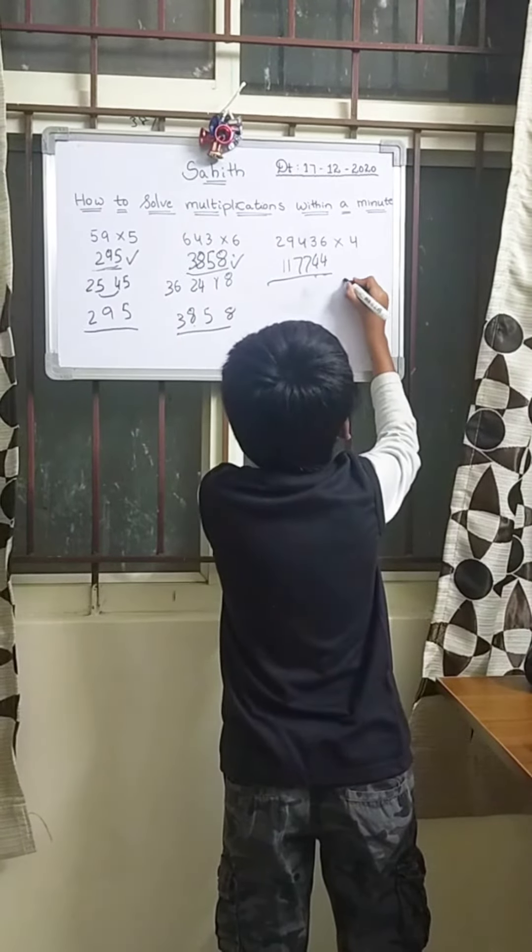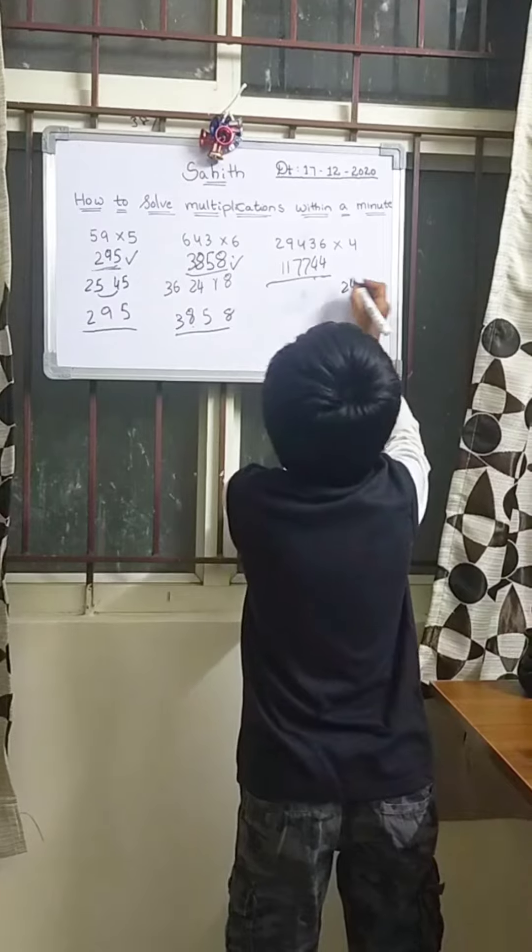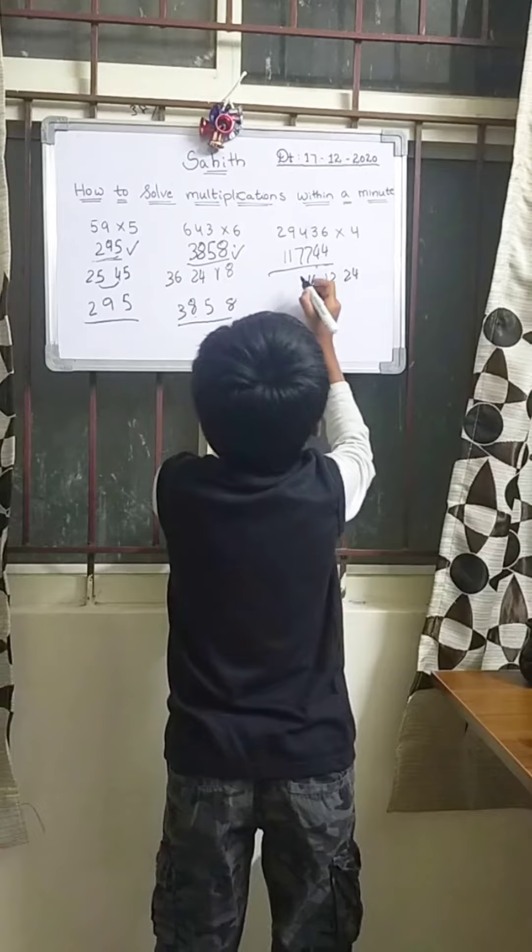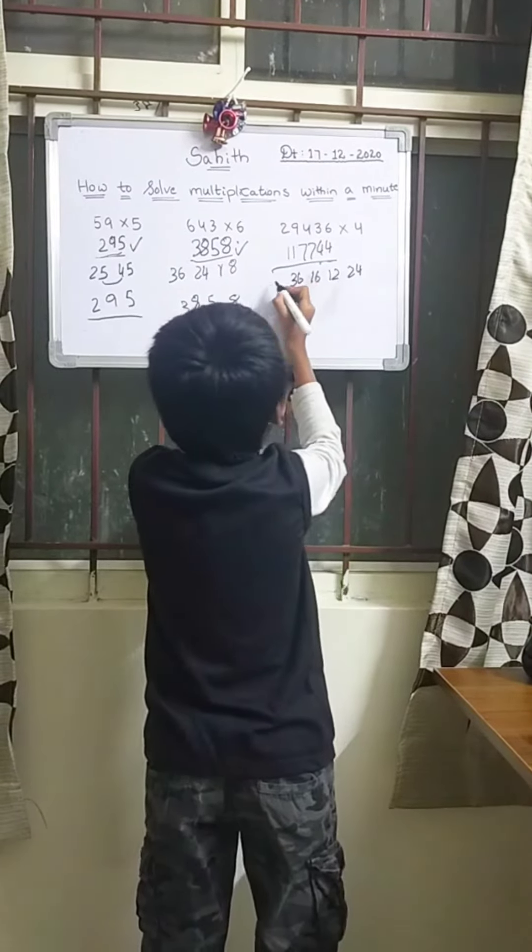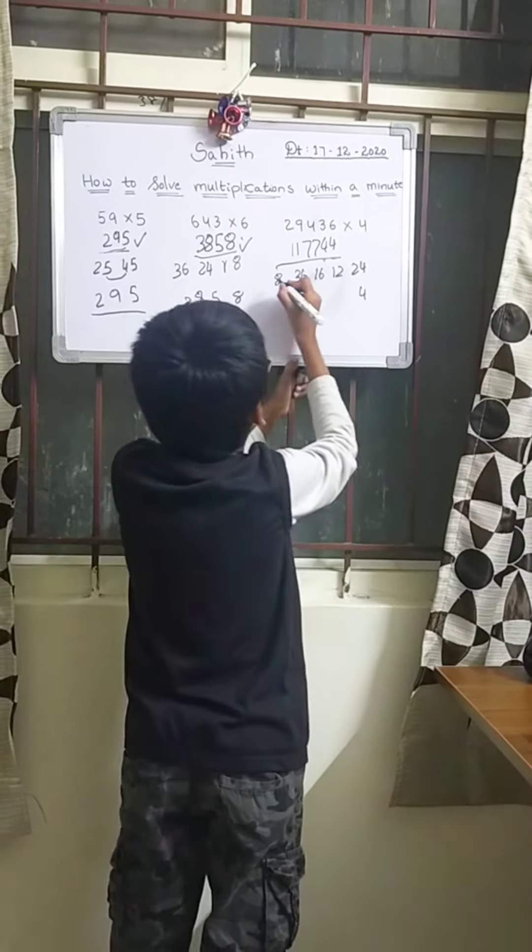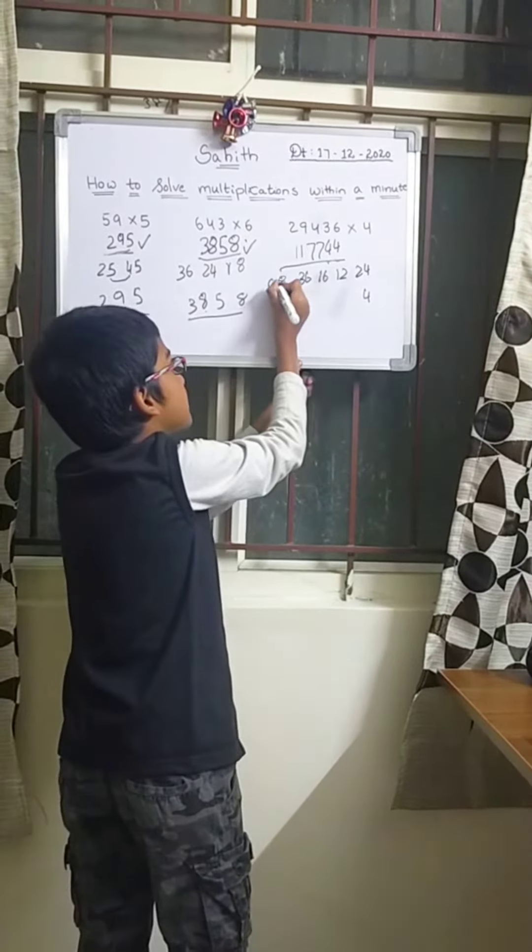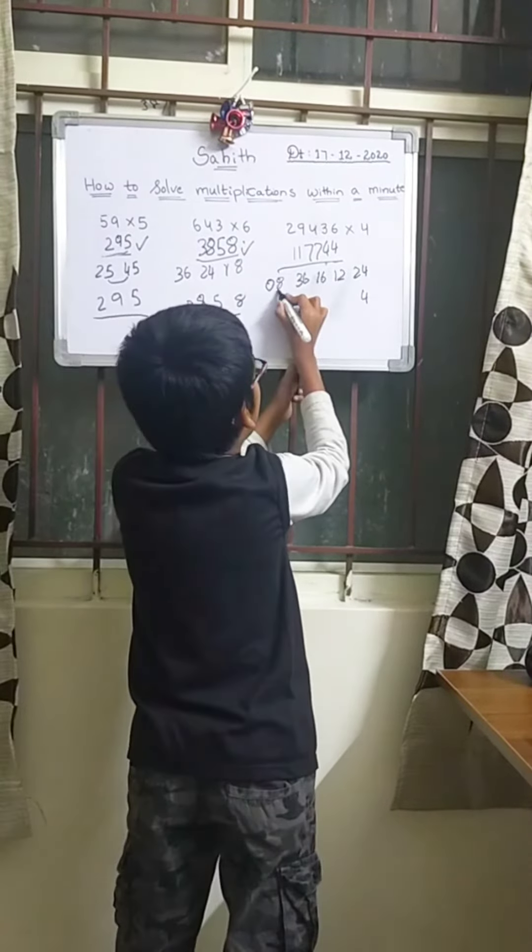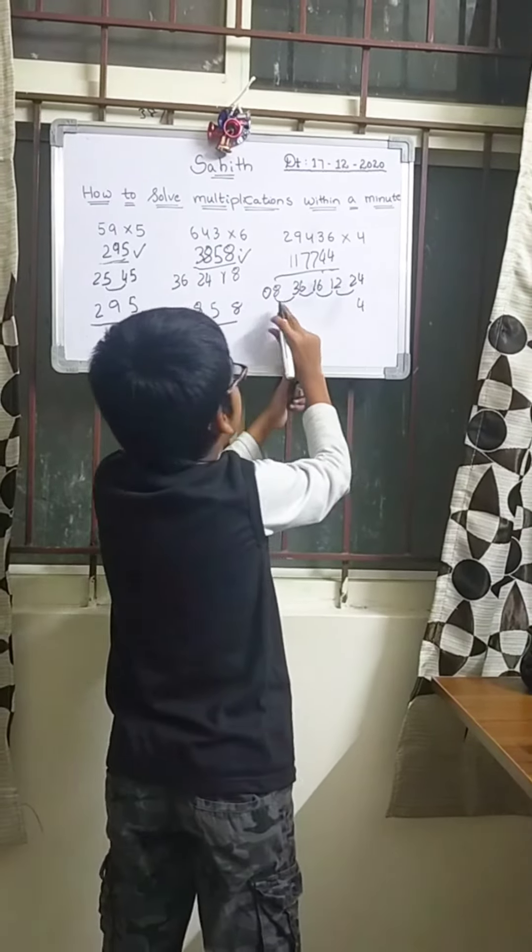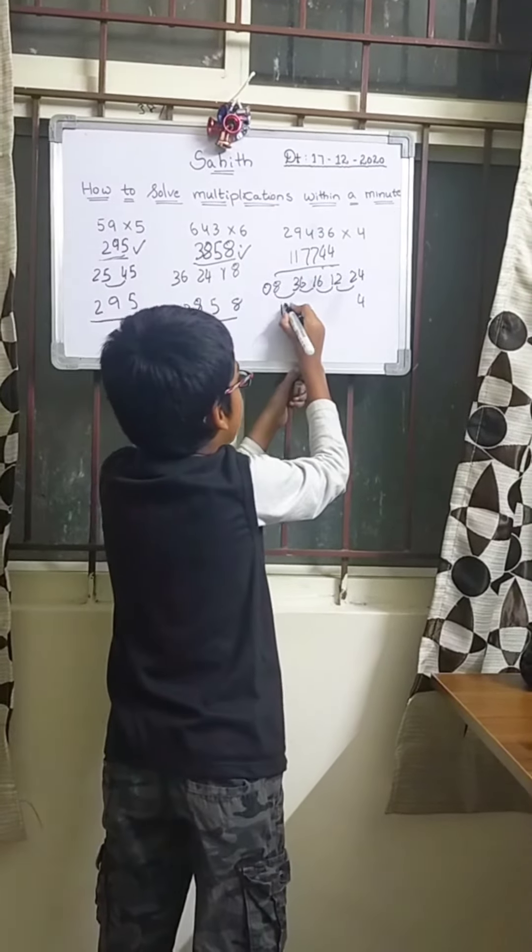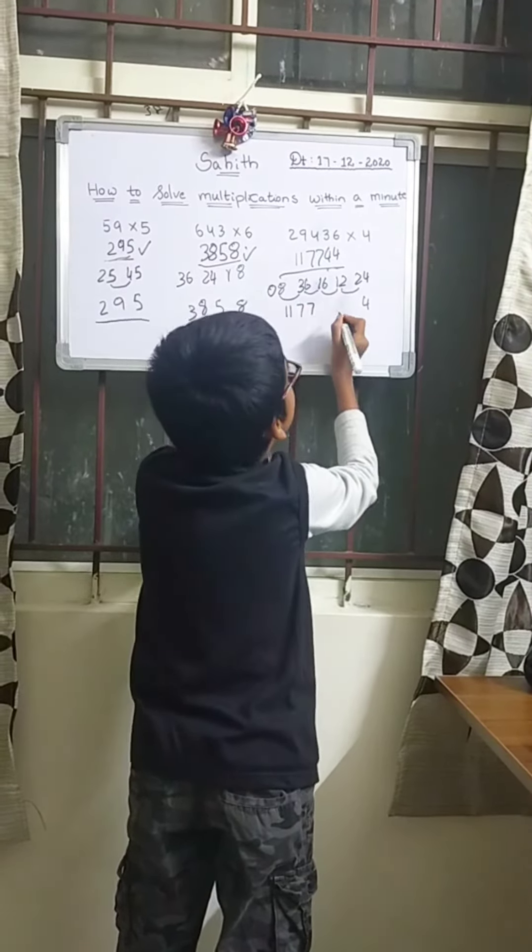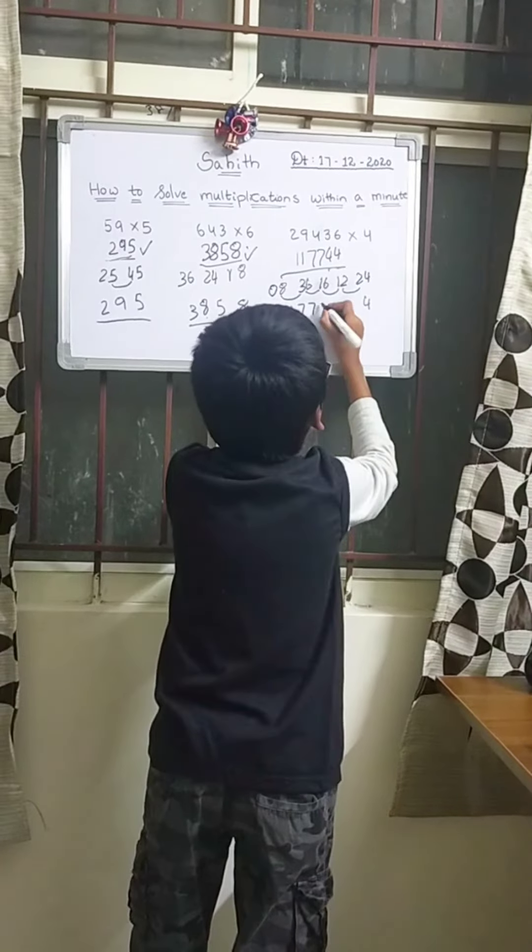4 sixes are 24, 4 threes are 12, 4 fours are 16, 4 nines are 36, 4 twos are 8. So we should take 4 down and before it we should keep 0 because it's a single number. We should have this 4, this 4, this 4, and this 4. 8 plus 3 is 11. 6 plus 1 is 7. 2 plus 2 is 4.